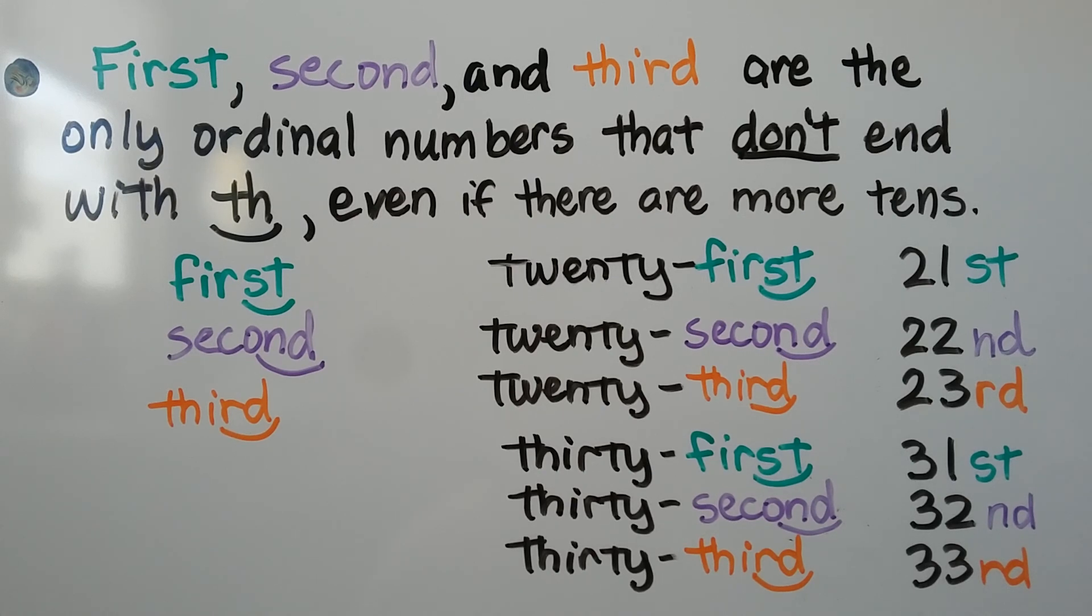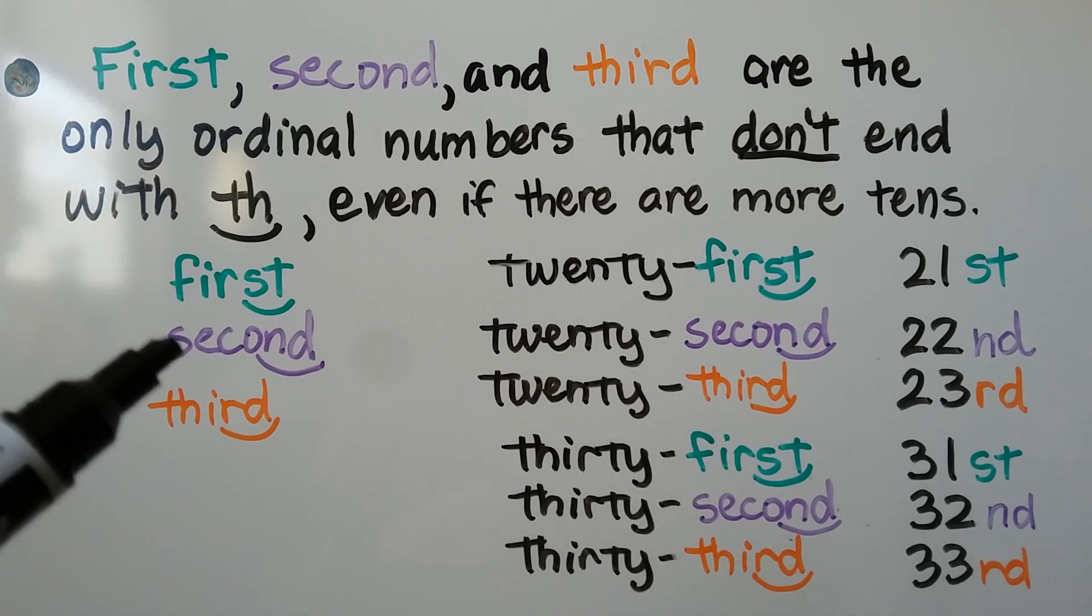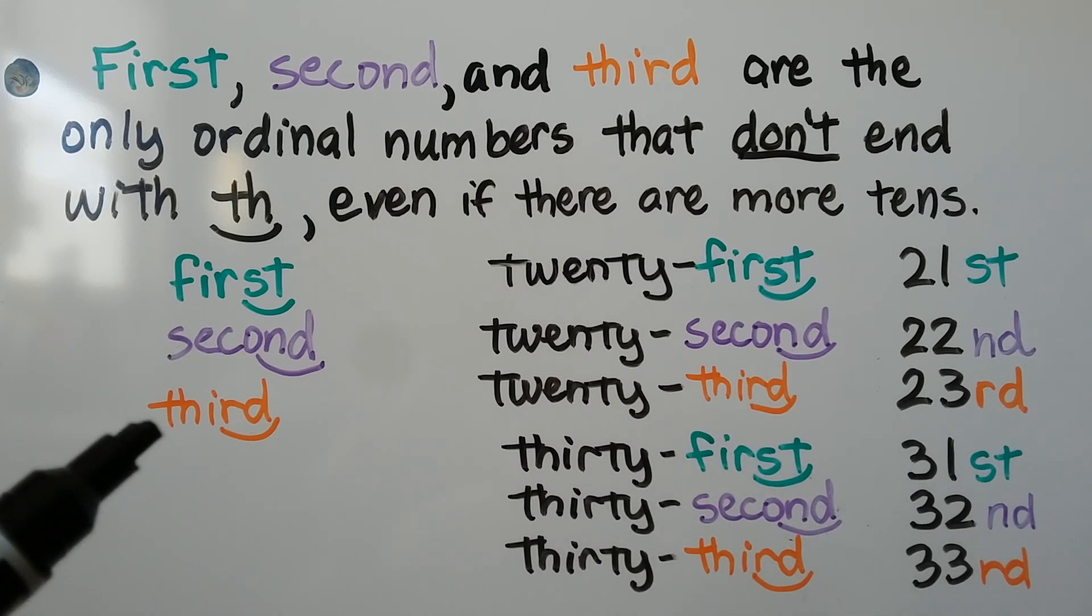First, second, and third are the only ordinal numbers that don't end with TH, even if there are more tens. First ends with an ST. Second ends with an ND, and third ends with an RD.